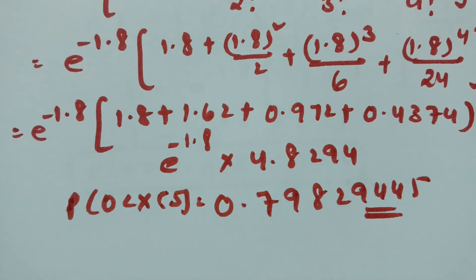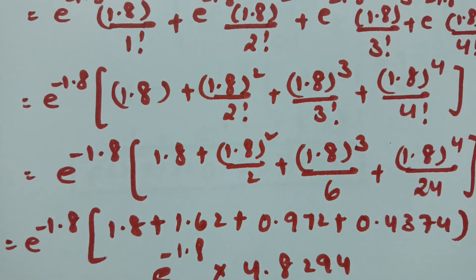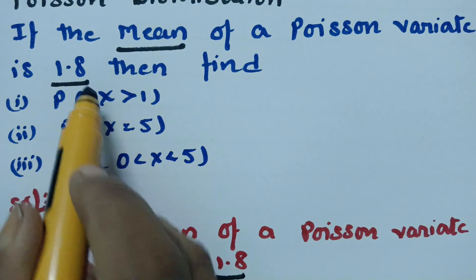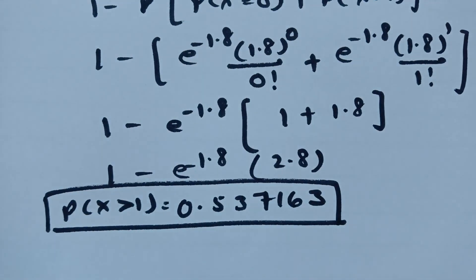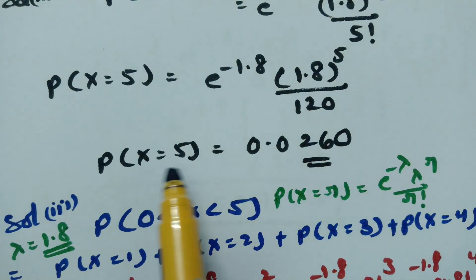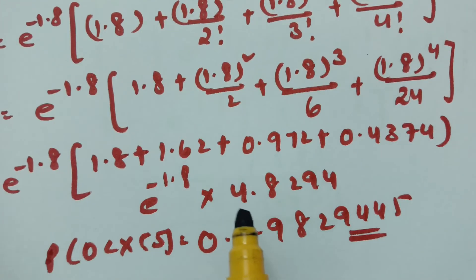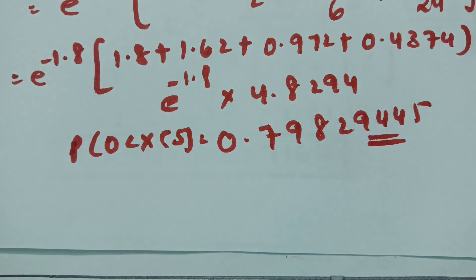This is how we solve the problem — it is quite simple if you follow these steps. To summarize: with mean lambda = 1.8, P(x > 1) = 0.537163, P(x = 5) = 0.0260, and P(0 < x < 5) = 0.79829445. Thank you so much for watching.